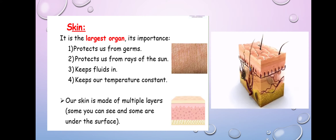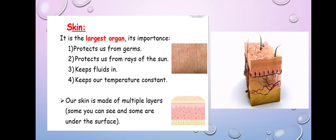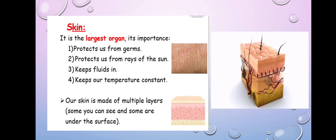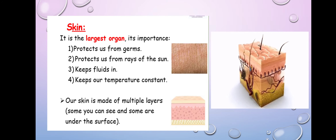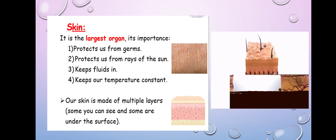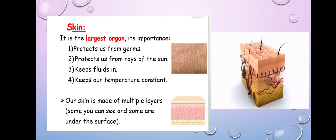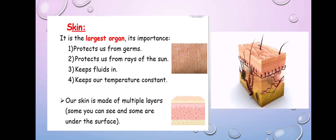Two, skin protects us from the rays of the sun — it protects what is under it from the heat of the sun. It also keeps the fluid in. Fluids are like blood in our body, like the water we drink. Our body needs those liquids, so the skin tries to keep those fluids in. Also, it keeps our temperature constant — fixed, stable, not changing from normal temperature.